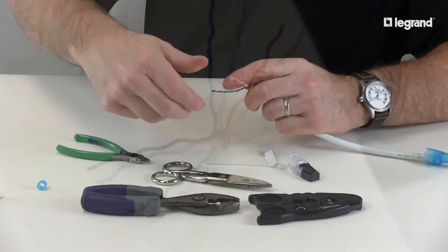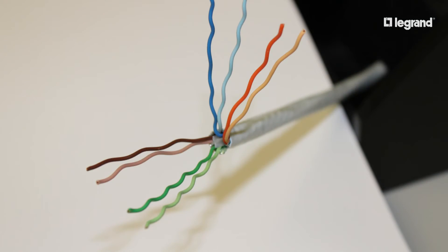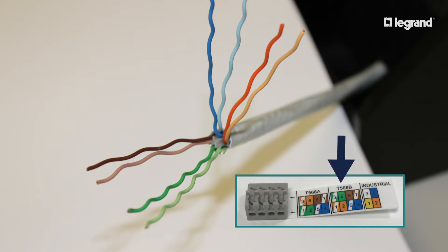TIA defines two wiring configurations, T568A and T568B. We're going to follow T568B wiring, shown here on the wiring cap label.